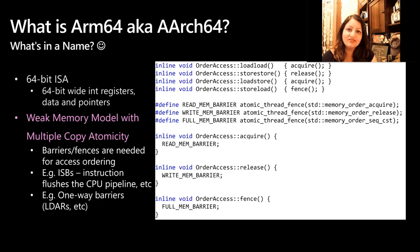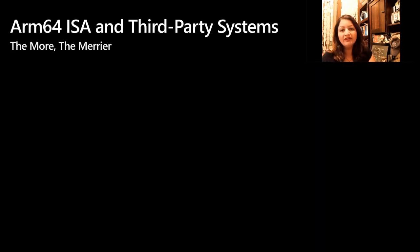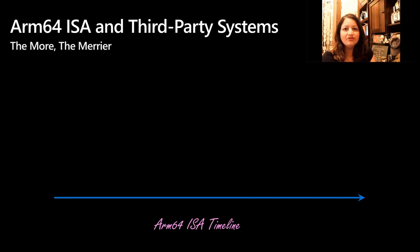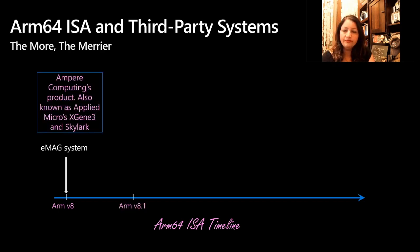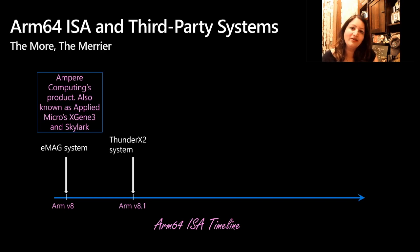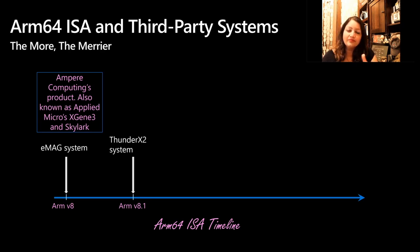Now let's look at the test systems we used during development as well as for CI/CD. I'll provide a quick timeline with respect to the ARM ISA. ARM64 started at ARMv8, and we have the EMAG system — an Ampere Computing product also known as Applied Micro XGene3 and Skylark. Next in the ISA timeline comes ARMv8.1, and for that we have the ThunderX2 systems. ThunderX2 is quite a fascinating system — it has 256 hardware threads. It's a Cavium Ink product, now owned by Marvell Technologies.